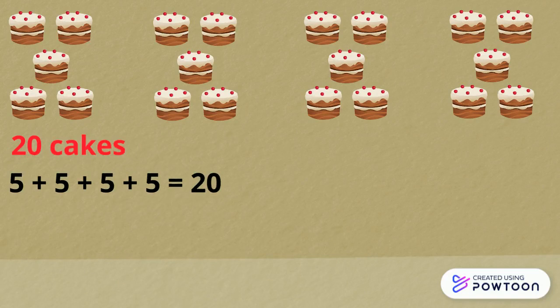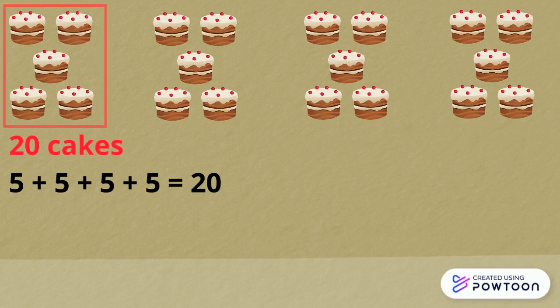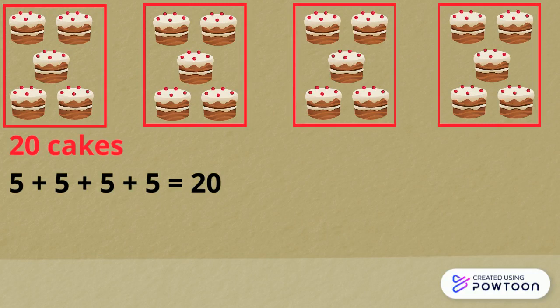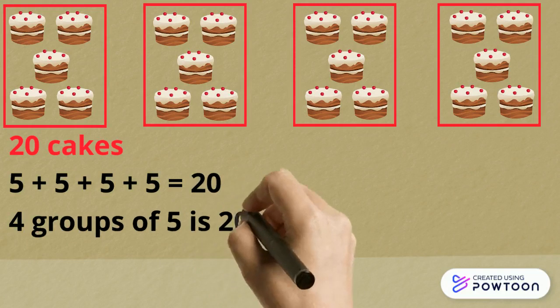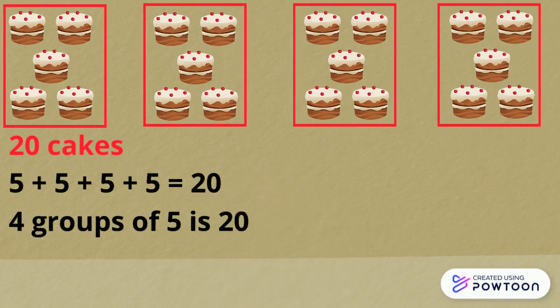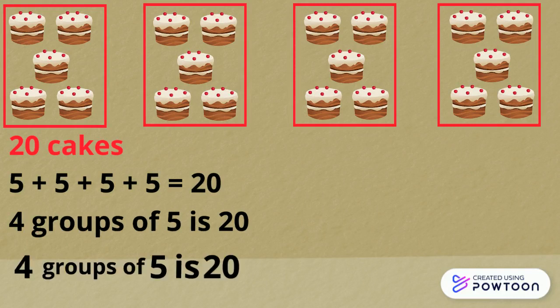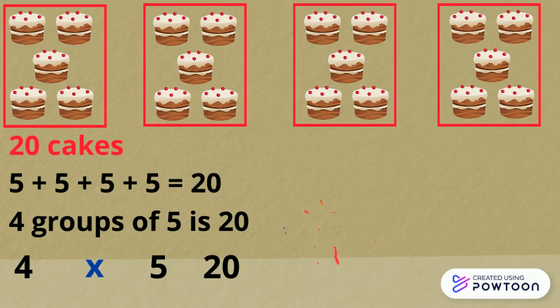Now see if you can write your groups of sum. How many groups can you see and how many cakes are in each group? You can see that there are 4 groups and in each group there are 5 cakes, so it will read 4 groups of 5 is 20. Now can you write a multiplication sum? We take away the 'groups of' sign and replace it with our multiplication sign, take away the 'is' and replace it with an equal sign, and it will read 4 times 5 equals 20.